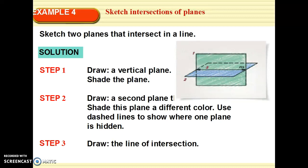Sketch two planes that intersect in a line. If you have two planes, two planes will always intersect in a line. When they intersect, they're going to intersect at a line. No matter where they intersect, it will always be a line. Two planes intersect in a line.